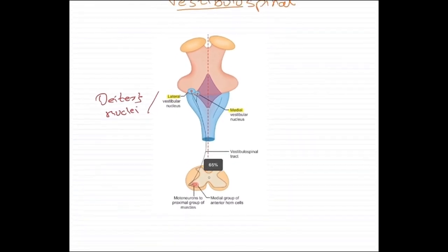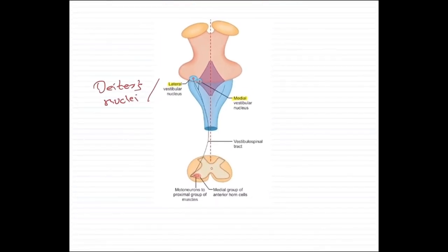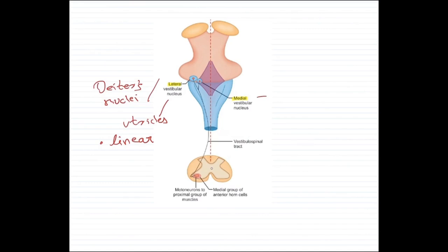The lateral and medial vestibular nuclei receive inputs from the vestibular apparatus. The lateral vestibular nucleus receives specifically from the utricles, and since it receives input from the utricles in the inner ear, it controls posture during linear acceleration. The medial vestibular nucleus also receives inputs from the vestibular apparatus, specifically the semicircular canals, and since it receives from the semicircular canals, it controls angular acceleration.